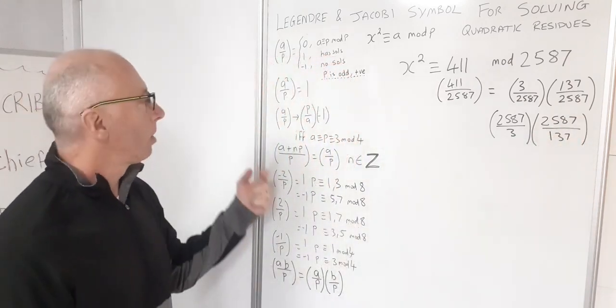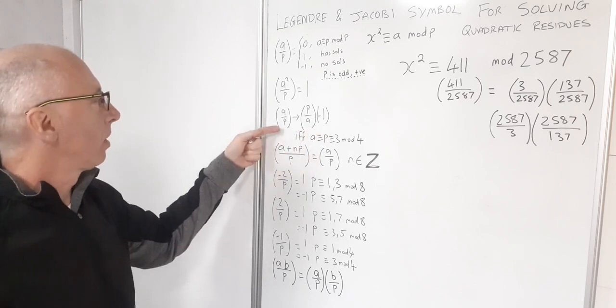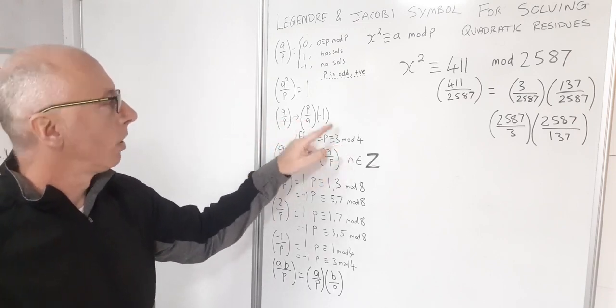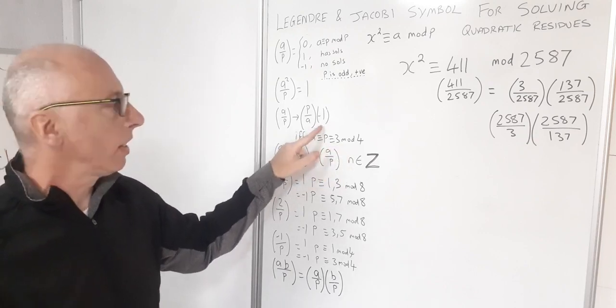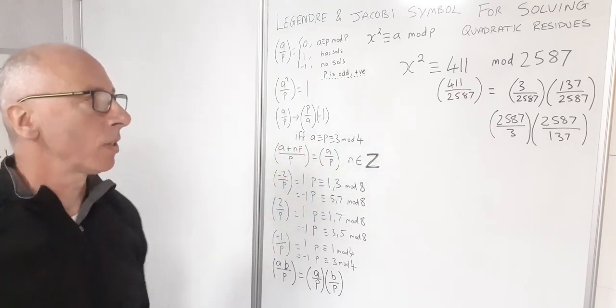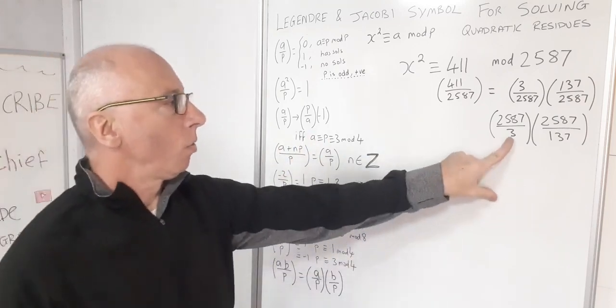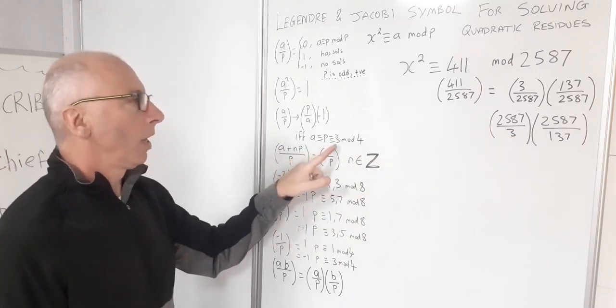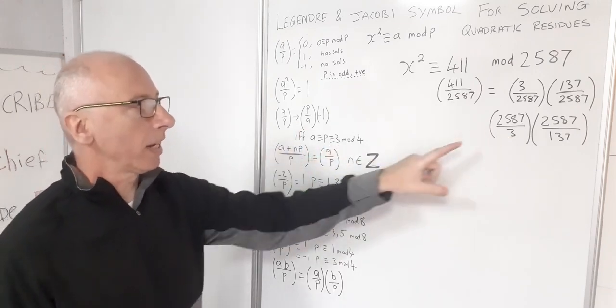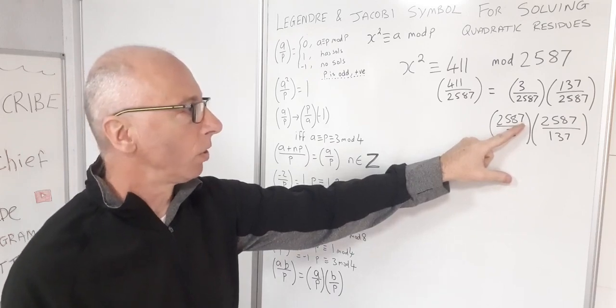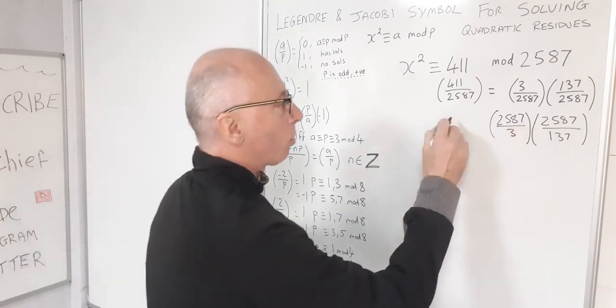Now do I need to put a minus 1 in front of here? So when I flip it, I need A and P congruent with 3 mod 4 to put a minus 1. If any of these cases is not shown, then I just leave it as positive. Well, 3 is congruent with 3 mod 4. So that's the case, and 2587 as well is congruent with 3 mod 4. So I've got one minus 1 sign here.